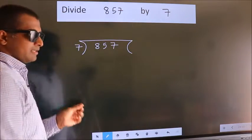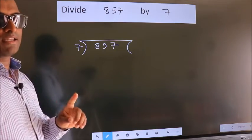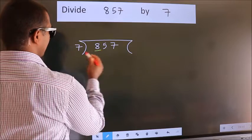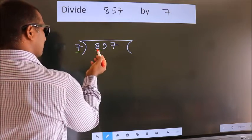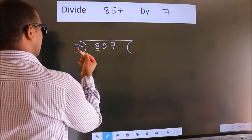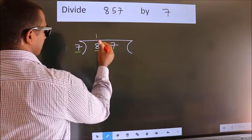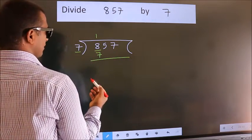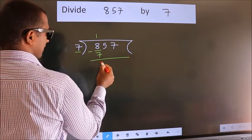This is your step 1. Next, here we have 8, here 7. A number close to 8 in the 7 table is 7 once, which is 7. Now, we should subtract. We get 1.